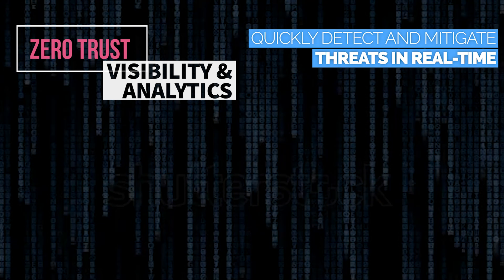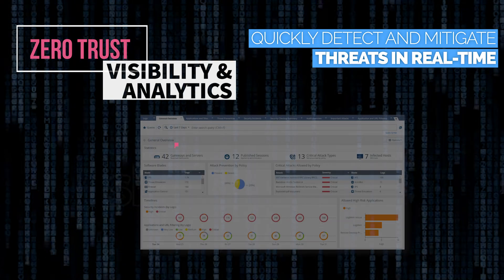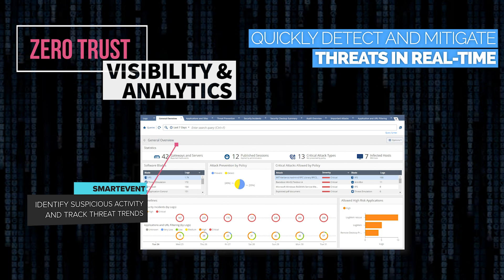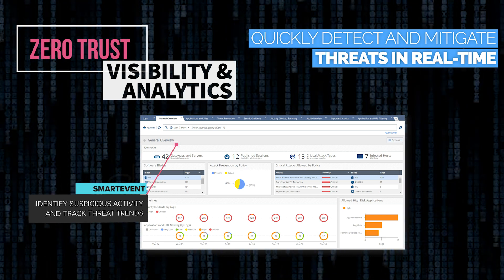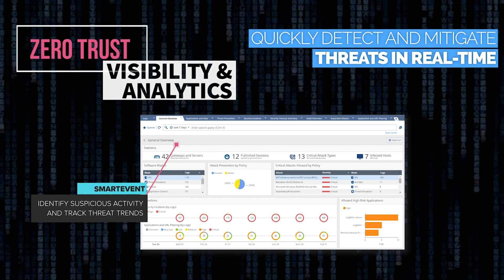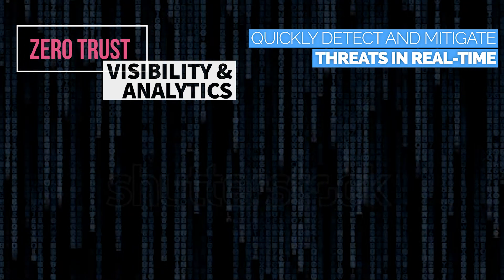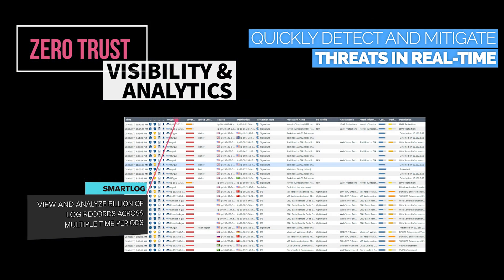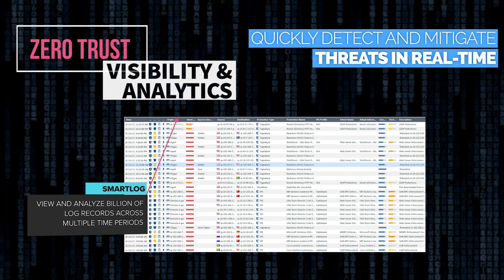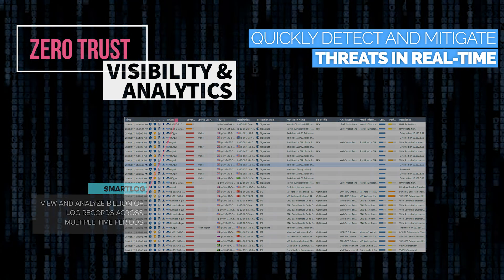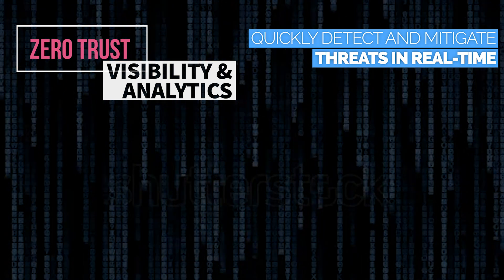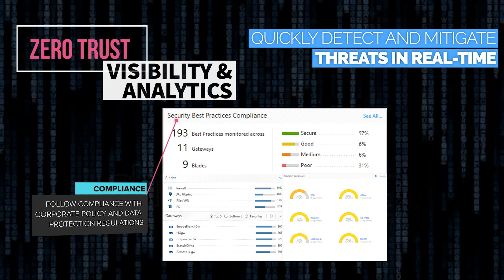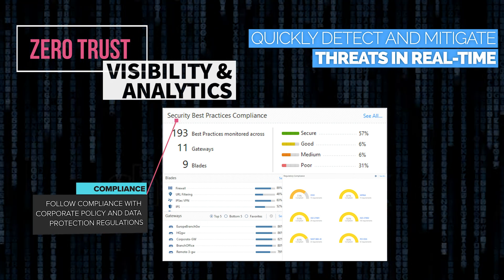Visibility and analytics are the core of any zero trust implementation. Checkpoint R80 centralized security management provides you full visibility into your entire security posture. Identify suspicious activity, view and analyze billions of log records, and follow corporate policy and regulations such as GDPR, HIPAA, PCI, and many more.